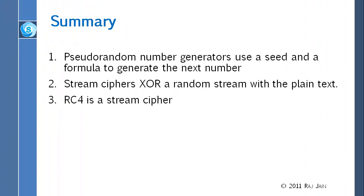That brings us to the end of this chapter. Three key summary points: pseudo-random number generators use a seed and a formula to generate the next number, using a very simple formula. Stream ciphers use a simple exclusive-OR of the plaintext with a random key stream to create the ciphertext. And RC4 is a widely-used stream cipher that embodies these principles.